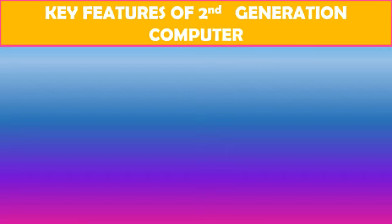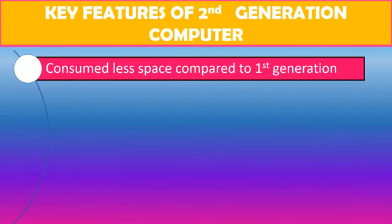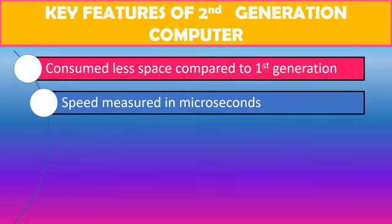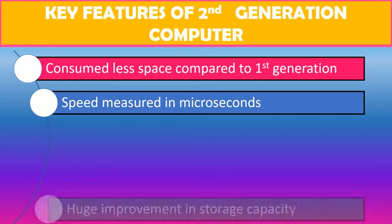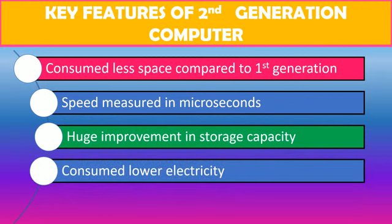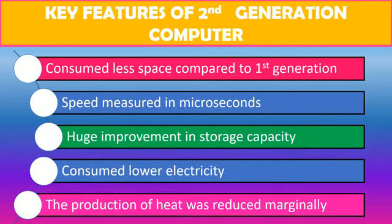The key features of second generation computers are: they consumed less space compared to first generation computers; speed was measured in microseconds, meaning the speed has increased from milliseconds; there was a huge improvement in storage capacity; they consumed less electricity; and the production of heat was also reduced marginally.